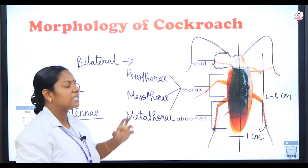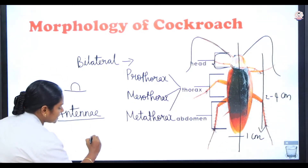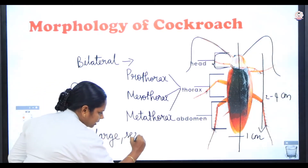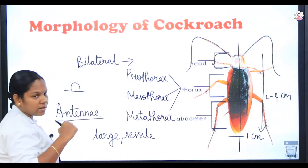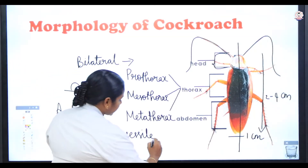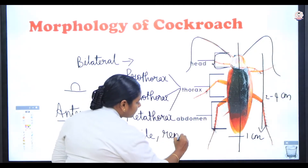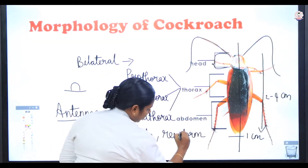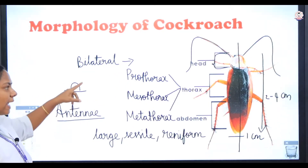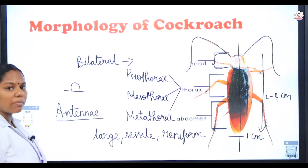Apart from antennae, the head consists of eyes. The eyes of the cockroach are large and sessile — sessile means we cannot move the eyelids, unlike humans. The eyes are also reniform, meaning kidney shaped. So the two sense organs of the cockroach head are the antennae and the eyes. Next we are going to see about the mouth parts.